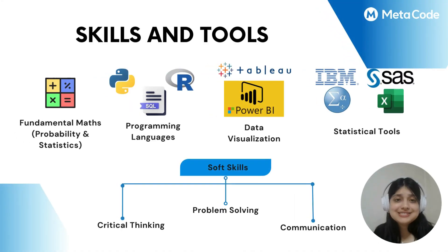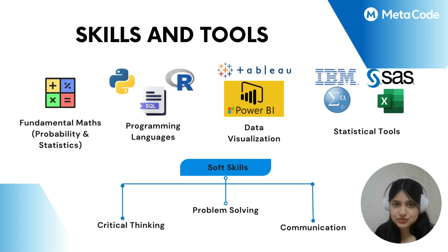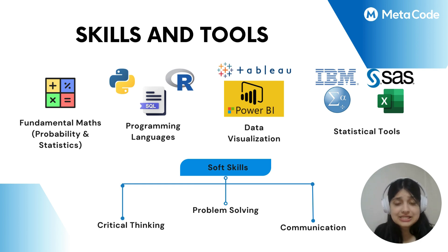Now let's talk about the skills and tools needed to be a data analyst. First and foremost, fundamental mathematics, statistics, and probability — these concepts need to be very clear. Then come technical skills: programming languages, data manipulation, statistical analysis, and data visualization. You need proficiency in Python and R for data manipulation and analysis, strong SQL skills for querying and managing databases, knowledge of statistical methods for data interpretation, and the ability to create compelling visualizations using tools like Tableau, Power BI, and libraries like Matplotlib and Seaborn.